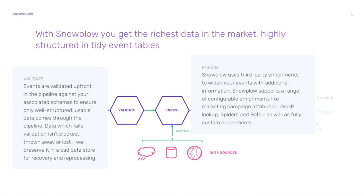Events that fail validation are not deleted but rather sent to a bad queue, where they can be analysed, visualised, and later reprocessed.